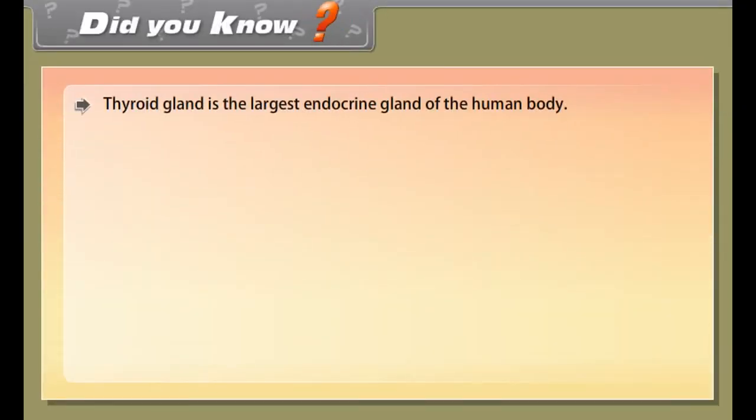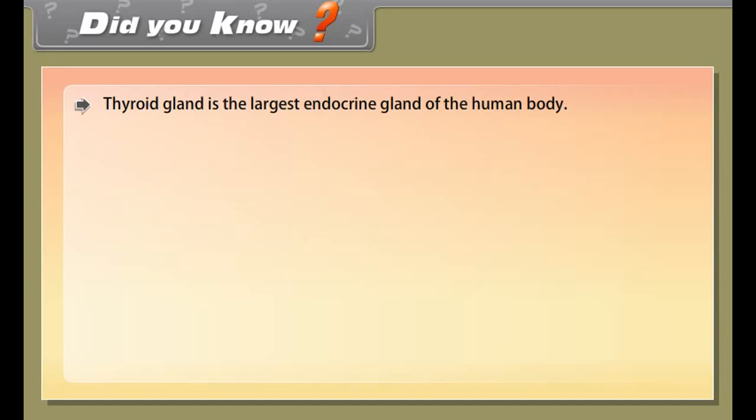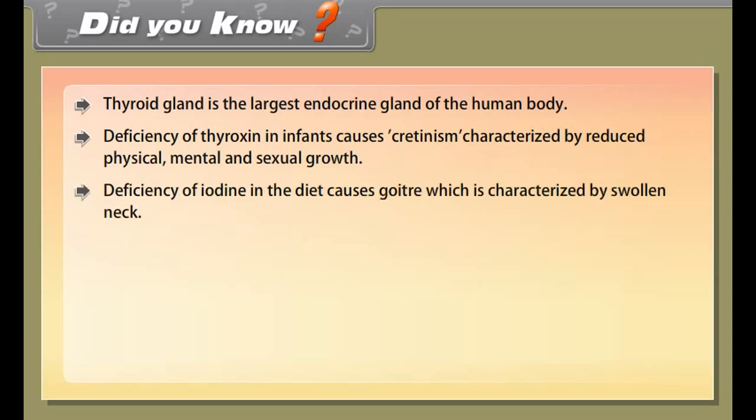Thyroid gland is the largest endocrine gland of the human body. Deficiency of thyroxin in infants causes cretinism characterized by reduced physical, mental and sexual growth. Deficiency of iodine in the diet causes goiter which is characterized by swollen neck. Adrenaline is also called emergency hormone or triple F hormone.